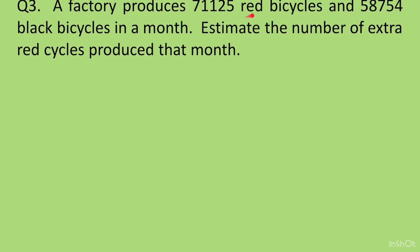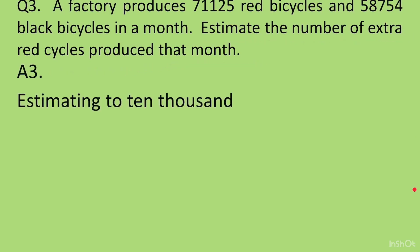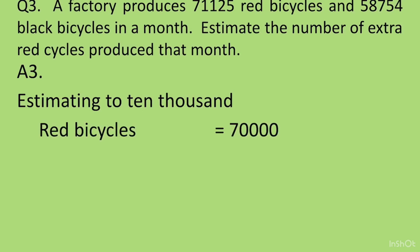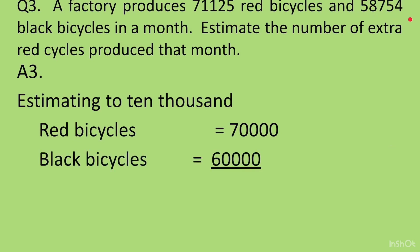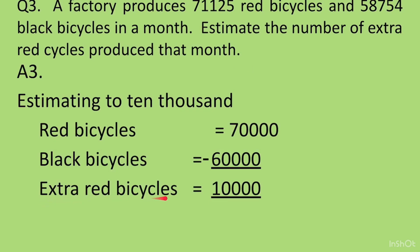Question 3: A factory produces 71125 red bicycles and 58754 black bicycles. Estimate the extra red cycles. Since both are 5-digit numbers, we round to the nearest 10000. For 71125, the thousands digit is 1, which is less than 5, so 7 stays as 7 — giving 70000. For 58754, the thousands digit is 8, greater than 5, so 5 becomes 6 — giving 60000. Extra red bicycles = 70000 minus 60000 = 10000.